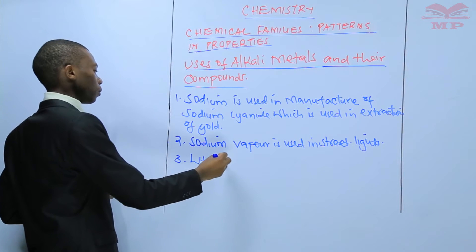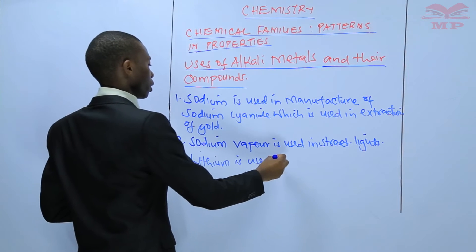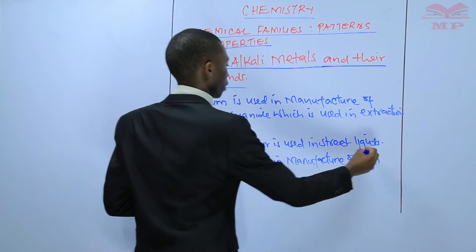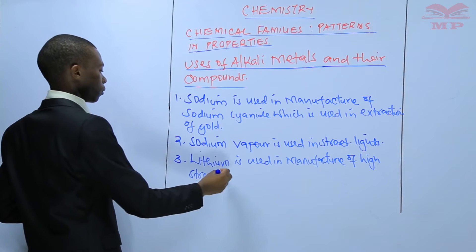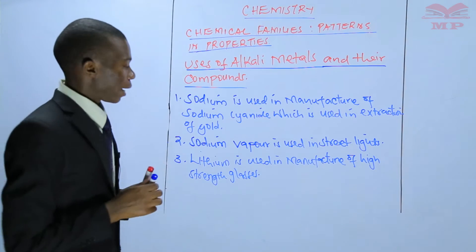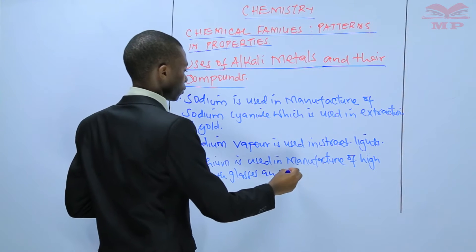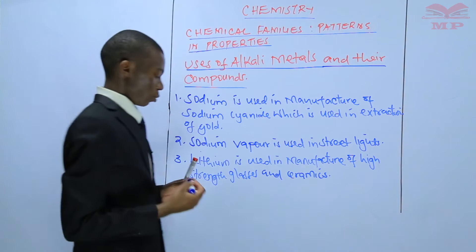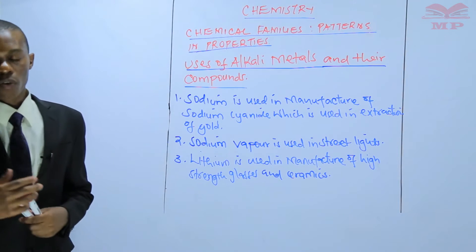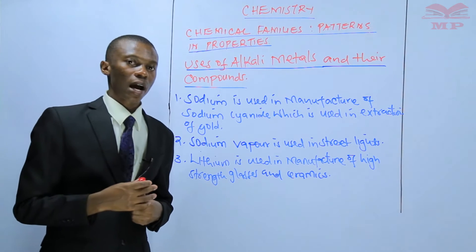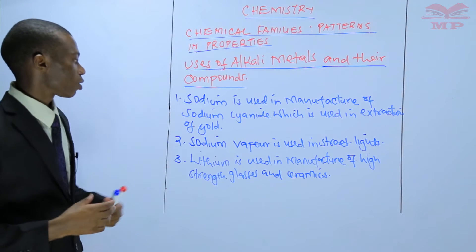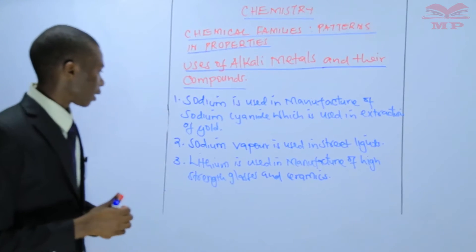Third: lithium is used in the manufacture of high-strength glasses and ceramics. Ceramics are a hard brittle material produced through burning of non-metallic minerals under very high temperatures. So lithium is used in the manufacture of high-strength glasses and ceramics.